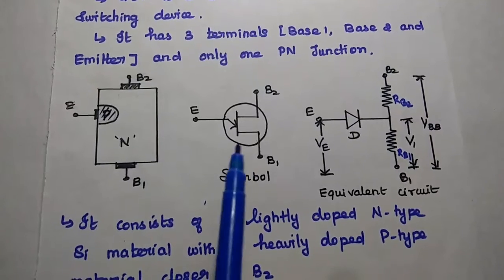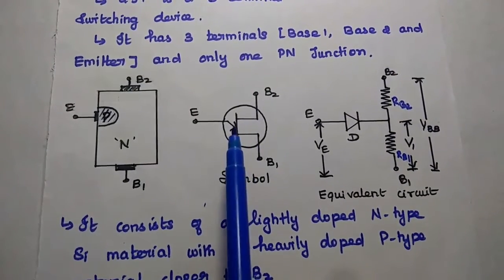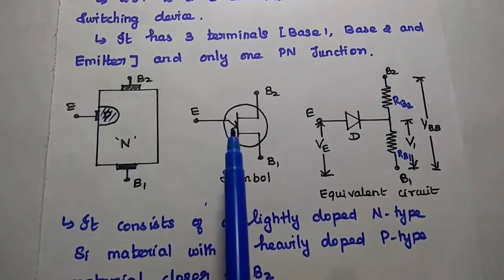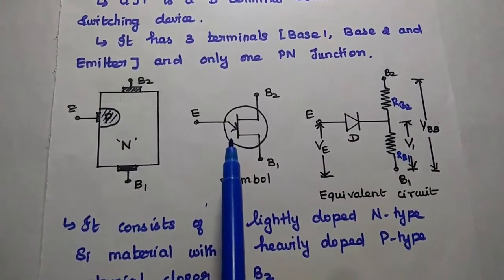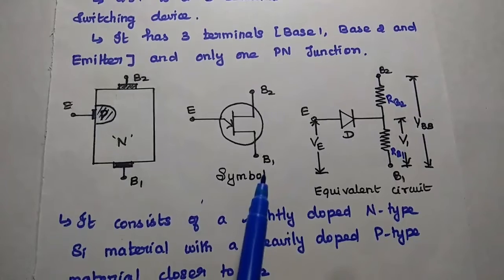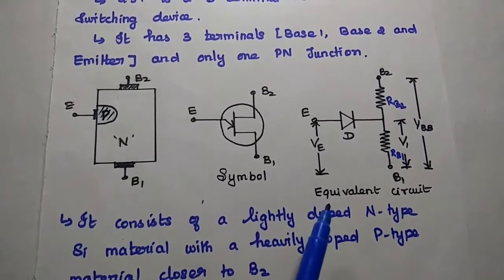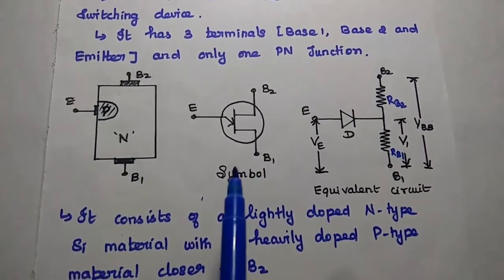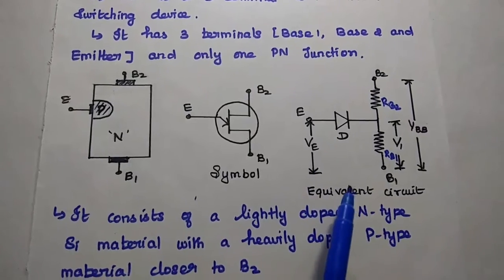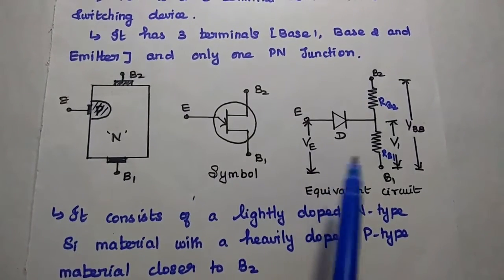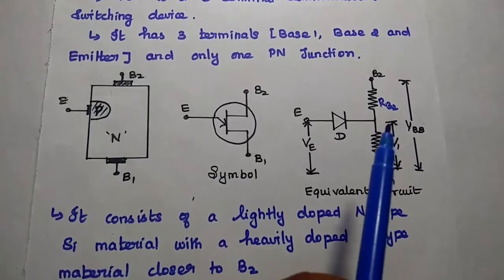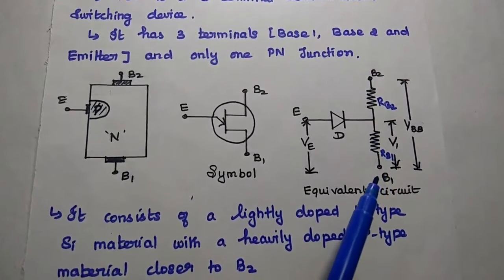This is the symbol of UJT. The downward arrow direction represents the flow of conventional current from the emitter to base 1. This is the equivalent circuit of UJT. This UJT can be represented with a diode and two inter-base resistances, that is RB1 and RB2.